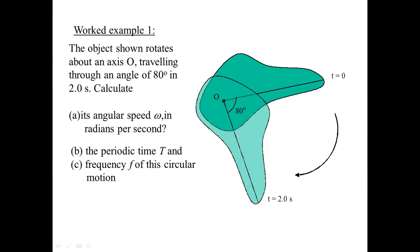Worked example 1. The object shown rotates about an axis O, traveling through an angle of 80 degrees in 2 seconds.